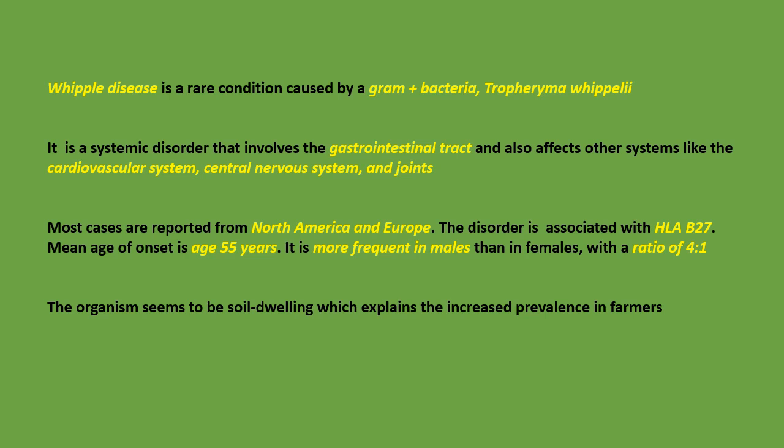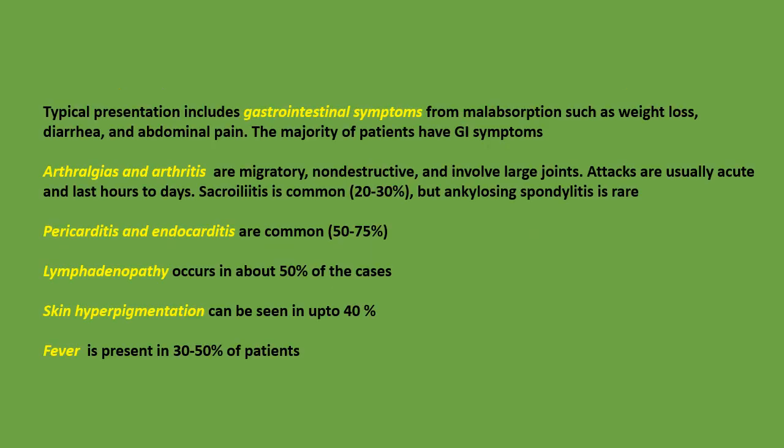Most cases are reported in North America and Europe. The disorder is associated with HLA-B27. Mean age of onset is 55 years, and it is more frequent in males than females with a ratio of four to one. The organism seems to be soil-dwelling, which explains the increased prevalence in farmers.